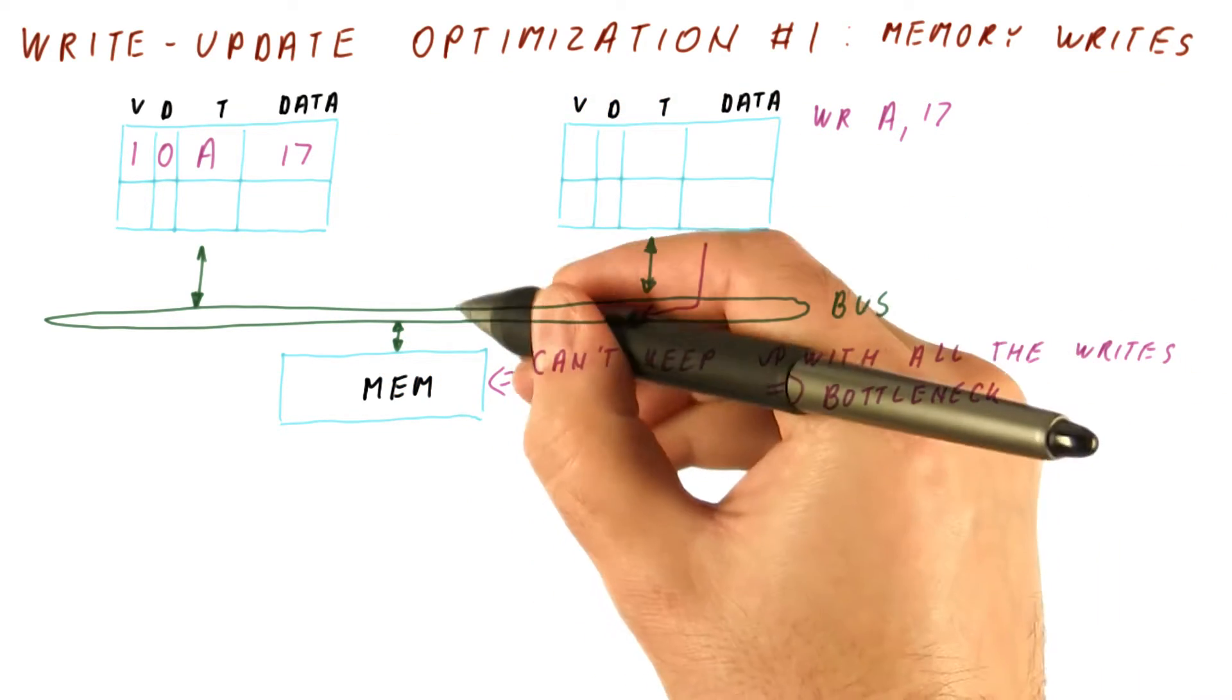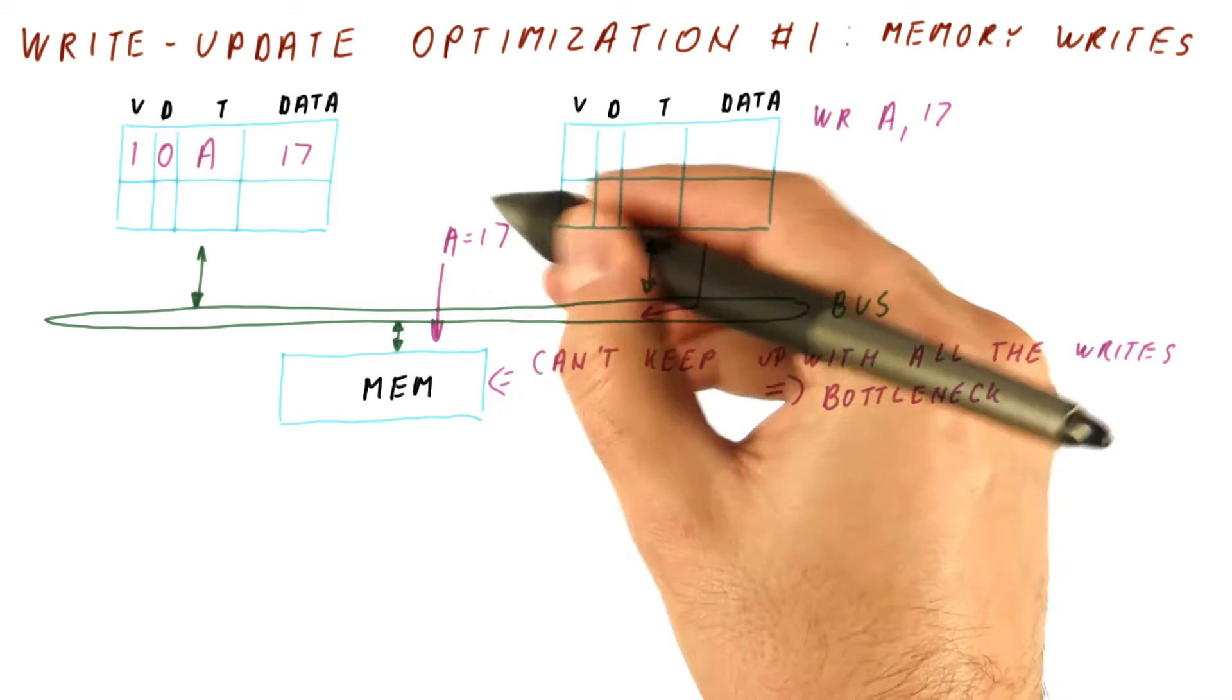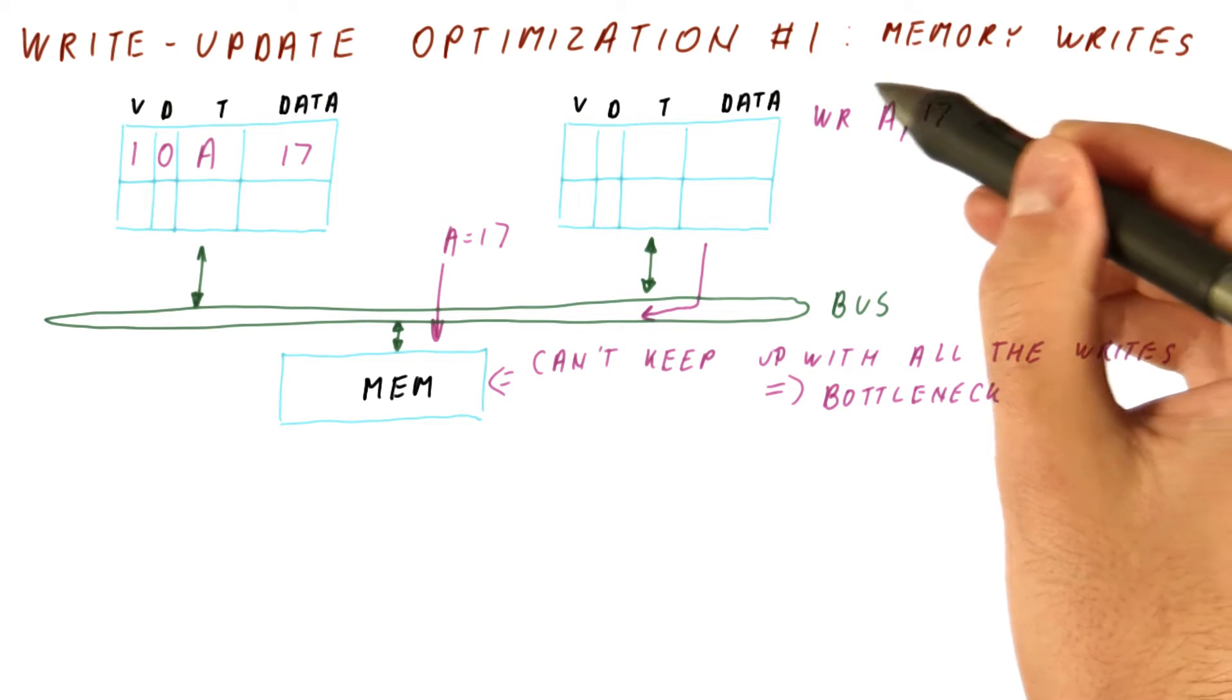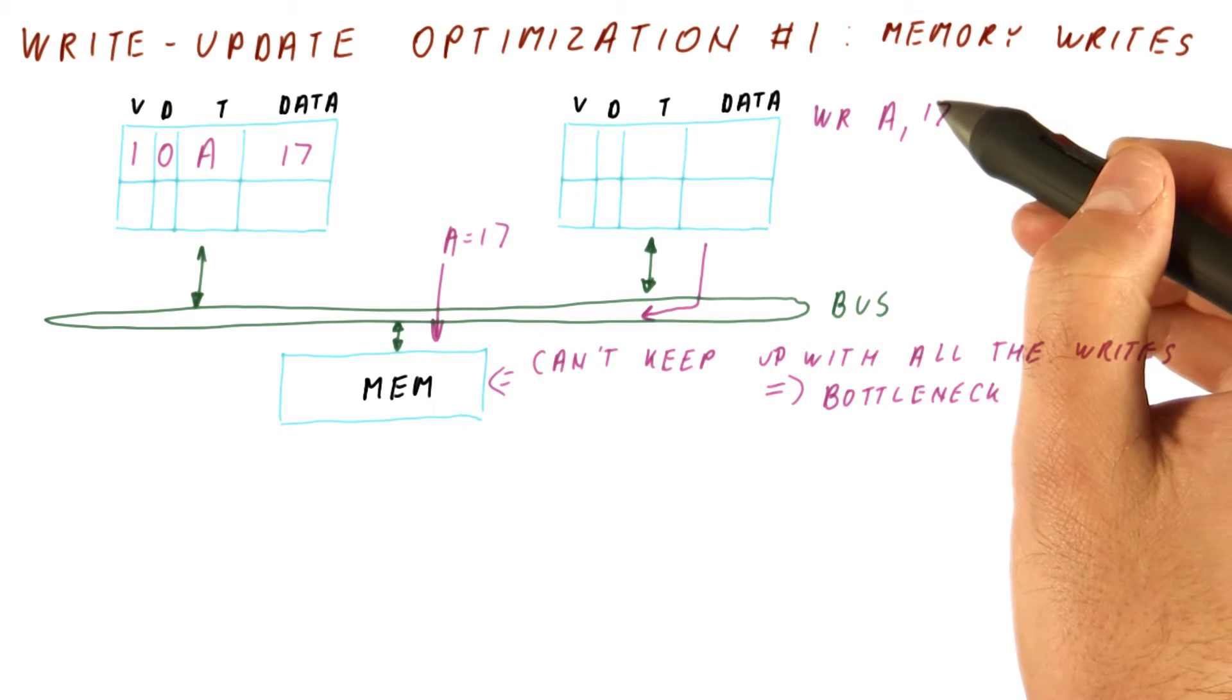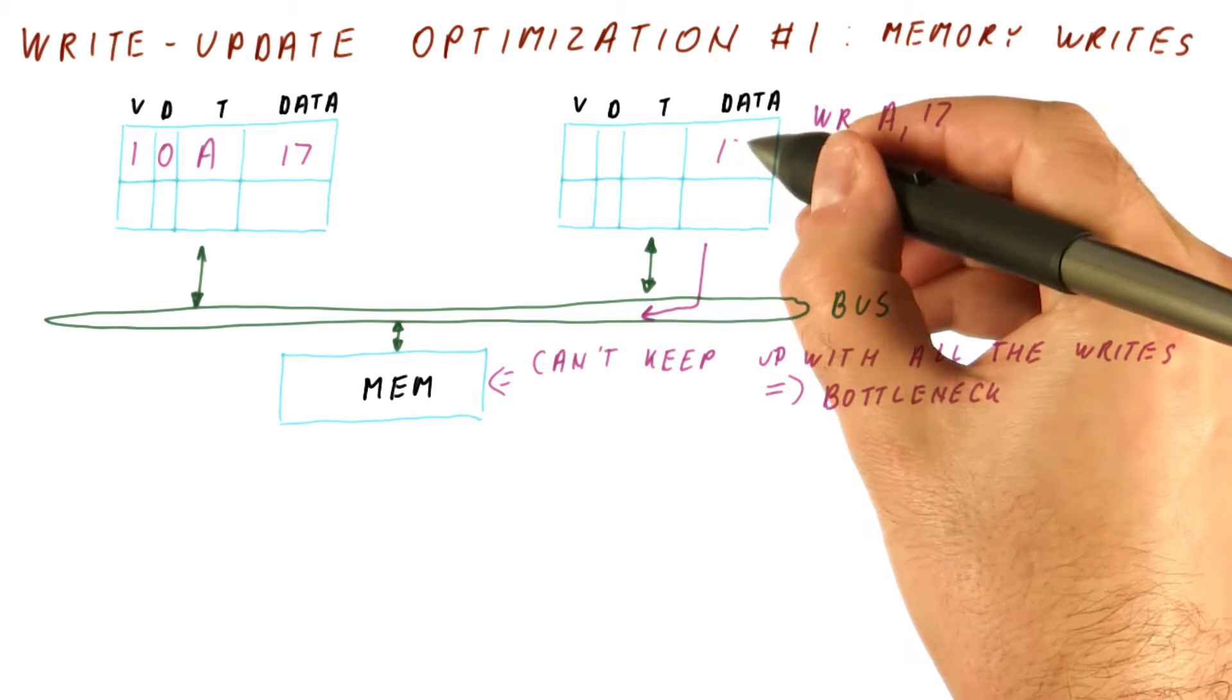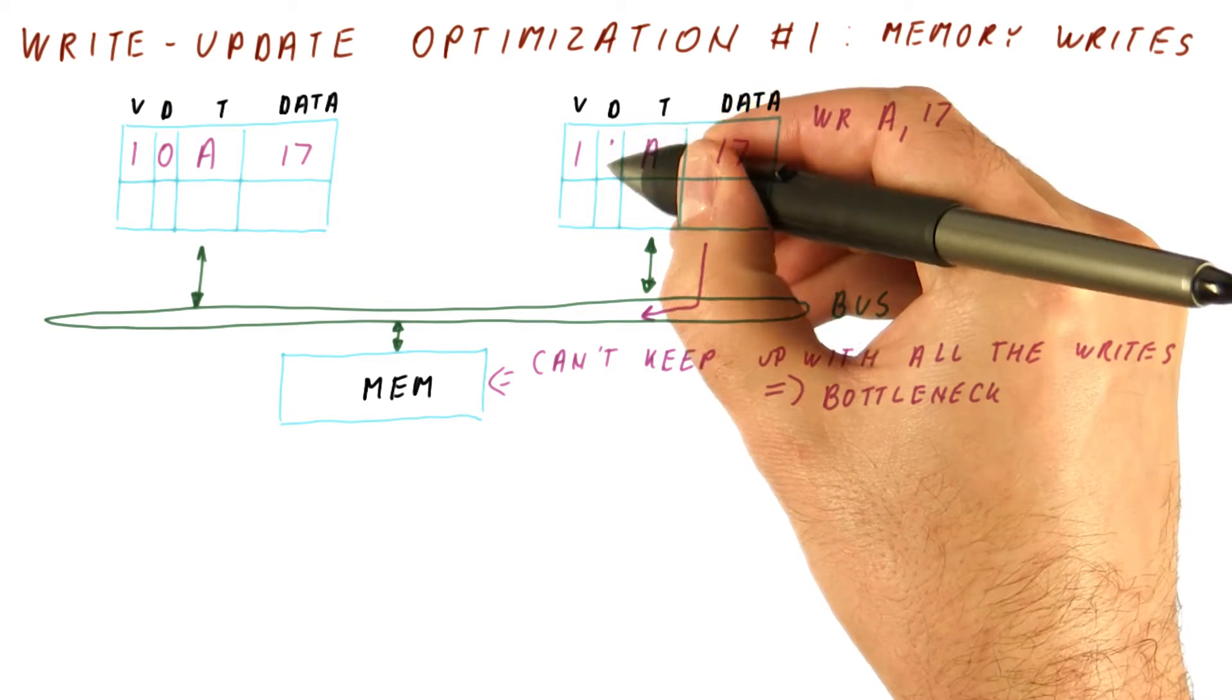Now, without a dirty bit, the memory would also be updated with A equals 17. We want to avoid that. Why? Well, because there could be a lot of writes here until we finally replace it in a write-back cache. So what we will do is we will write 17, tag it this way, and mark this as dirty.